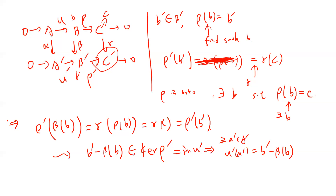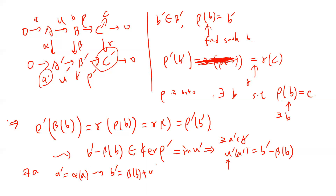So there exists a' in A' such that μ'(a') = b' − β(b). Since α is an isomorphism, there exists a in A such that α(a) = a'. Therefore b' = β(b) + μ'(α(a)). By commutativity, μ'(α(a)) = β(μ(a)), so b' = β(b + μ(a)).